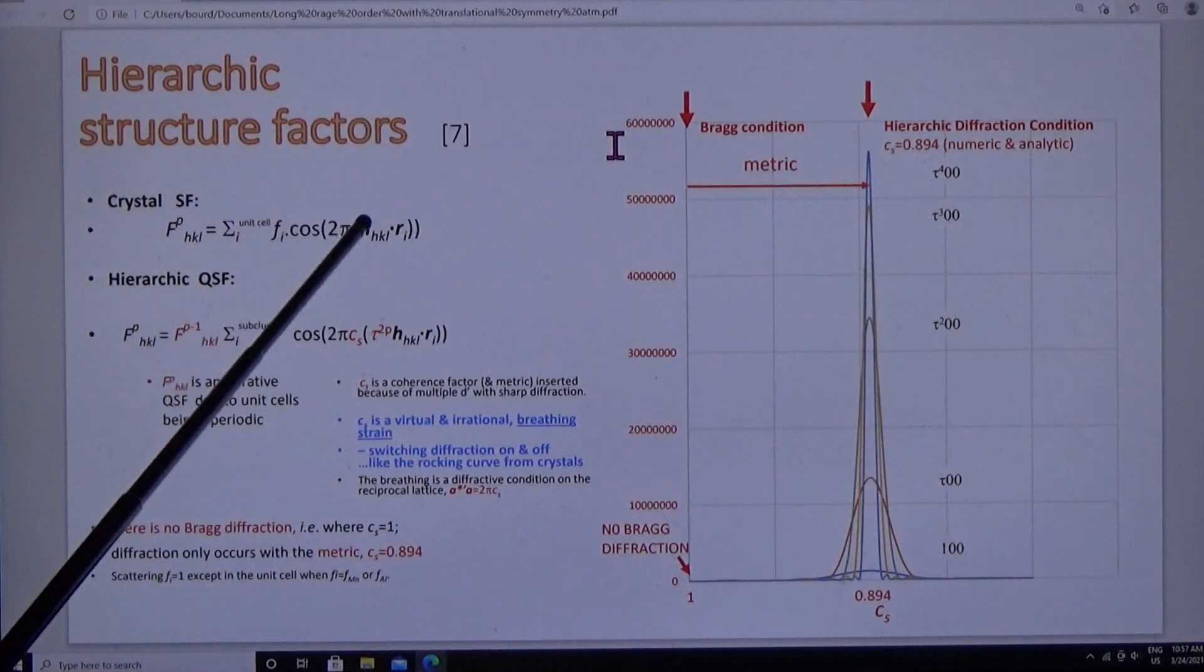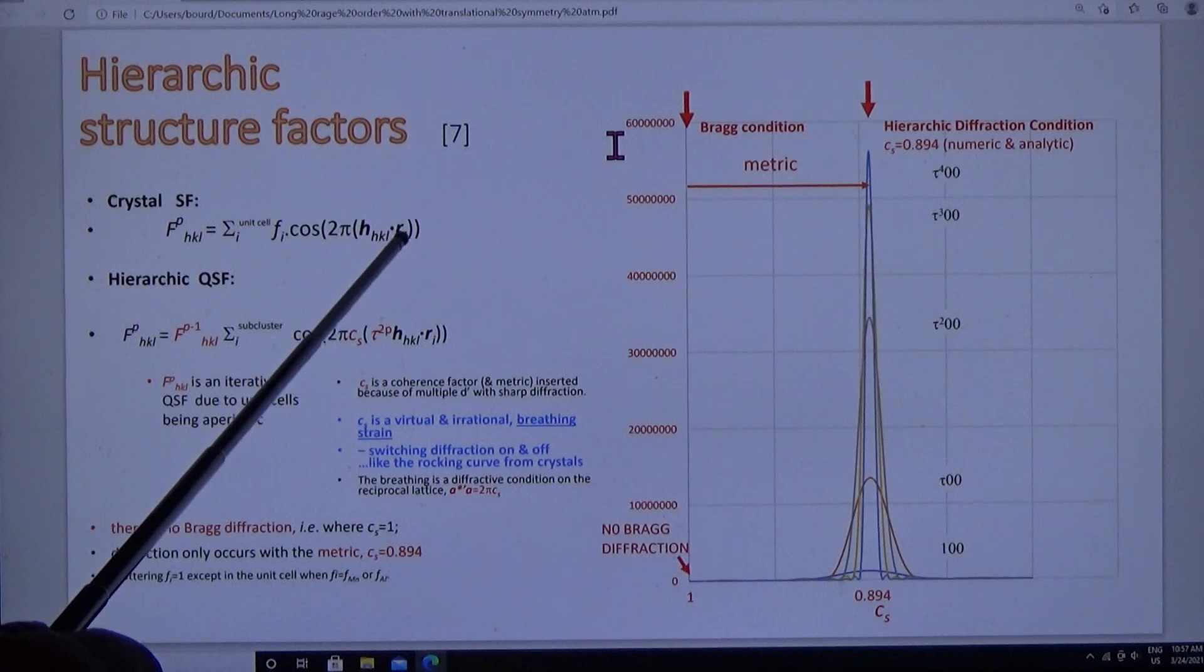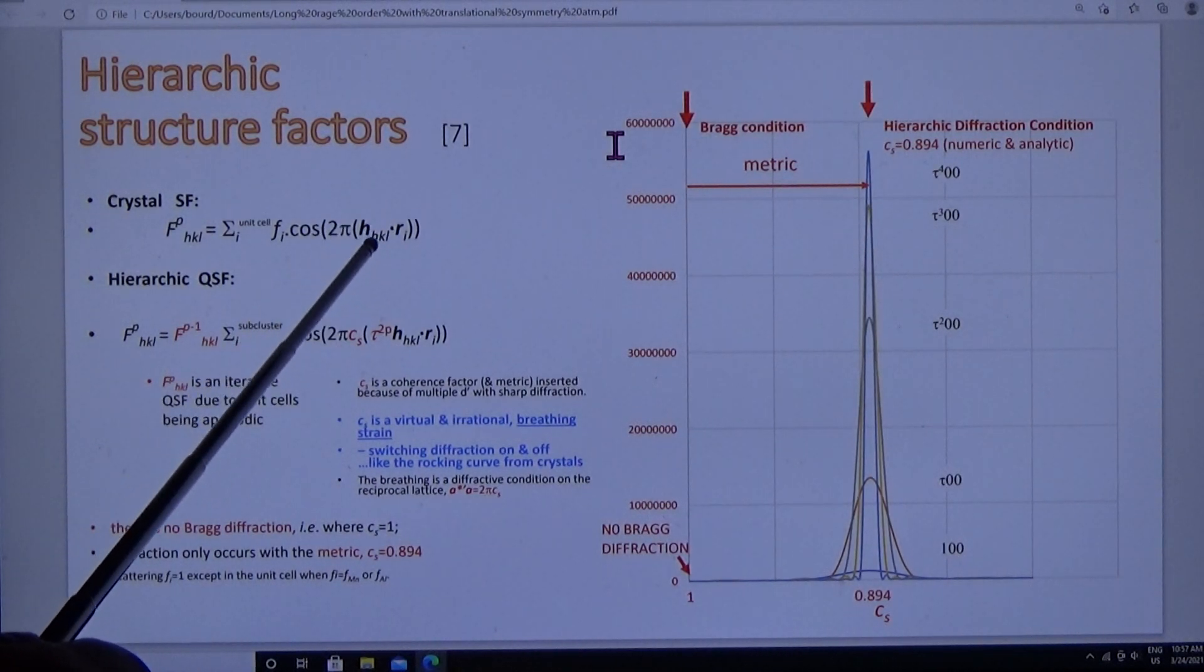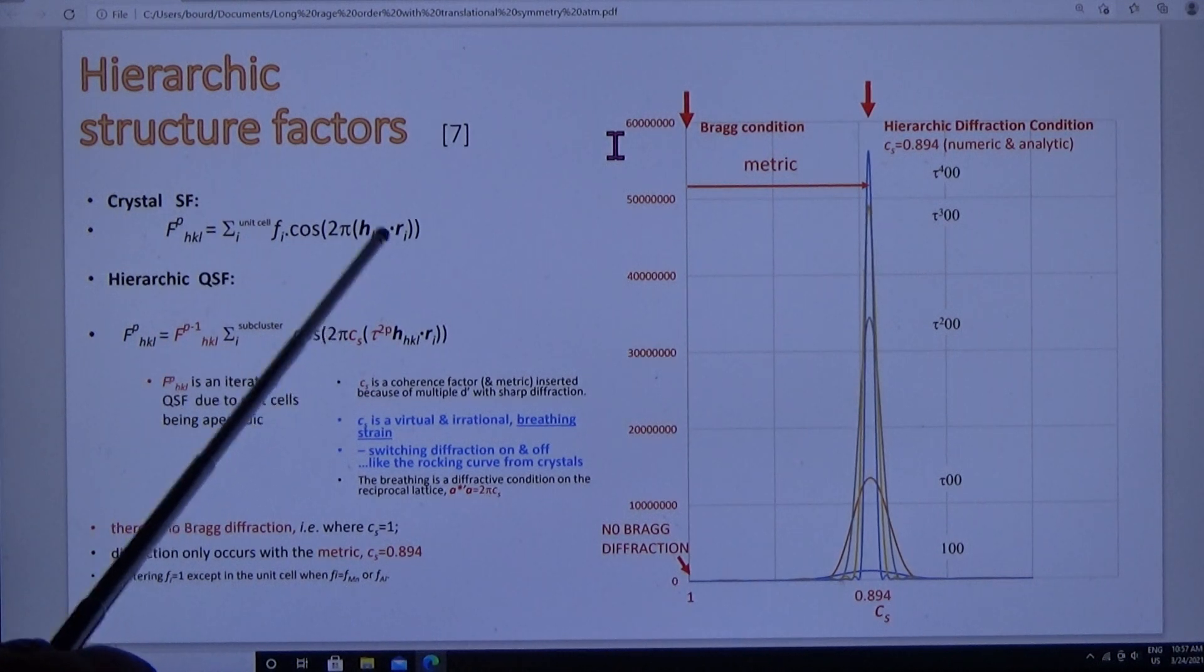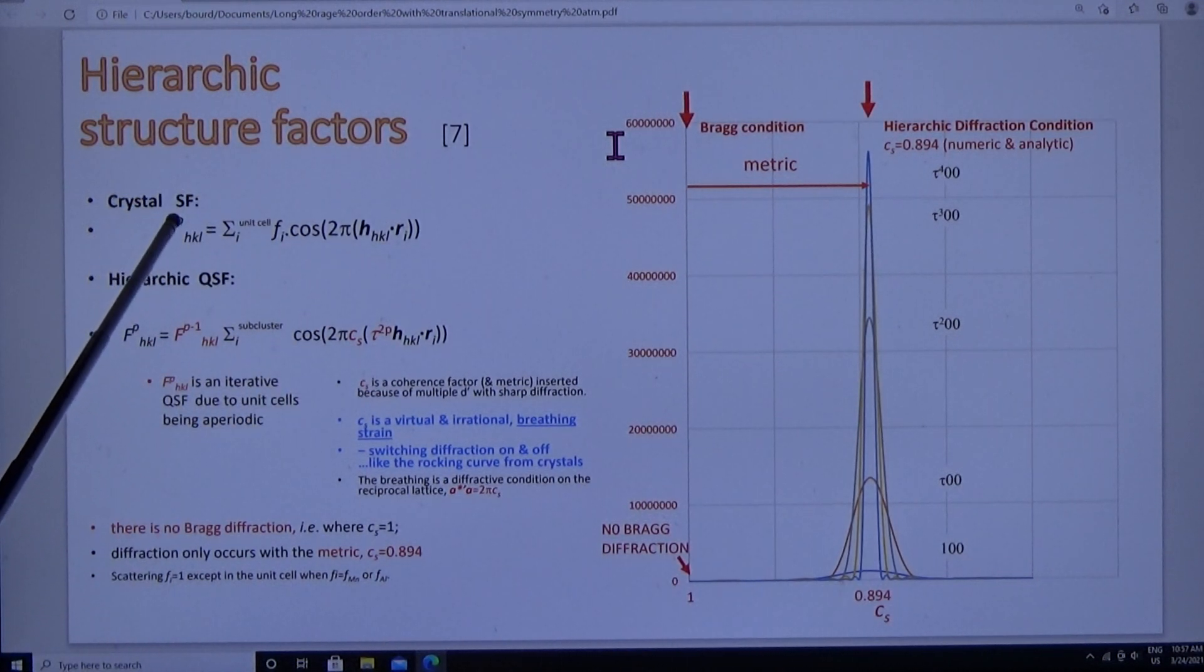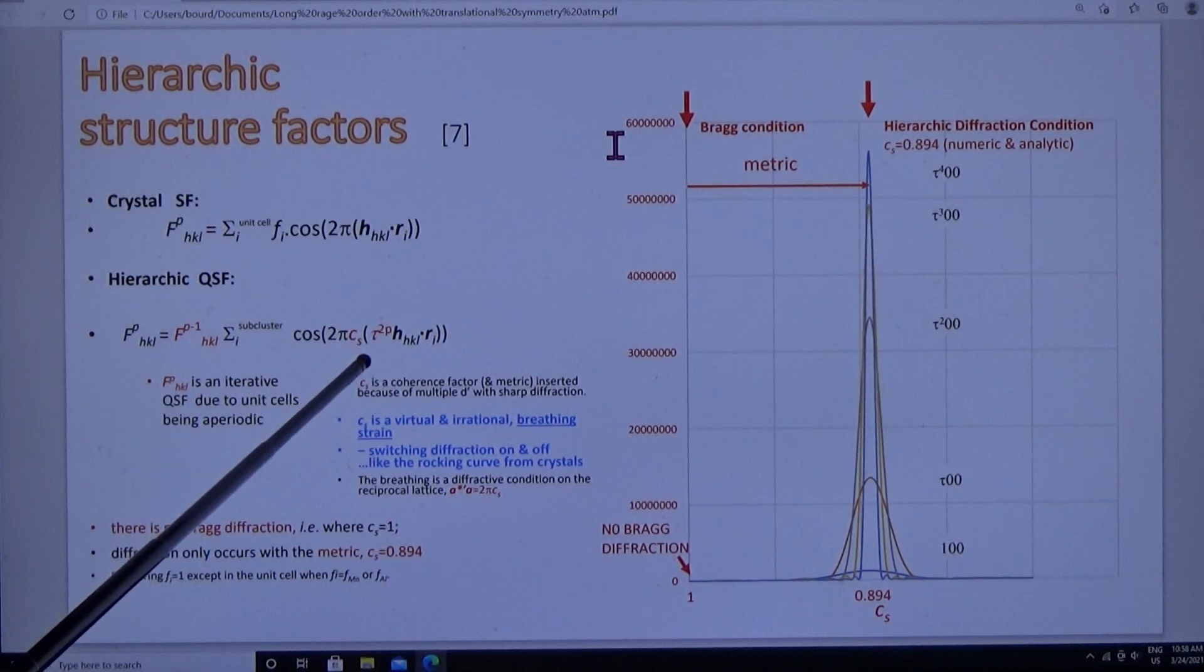So how do we calculate the structure factor? In the crystal, we project each atom site R onto a selected plane normal H, and sum the cosine phases. That gives the amplitude for the selected Bragg wave.